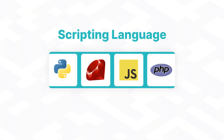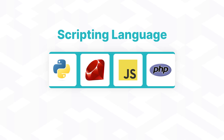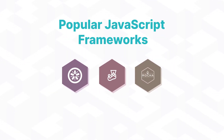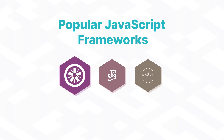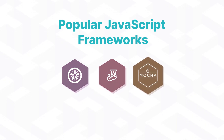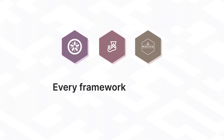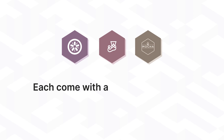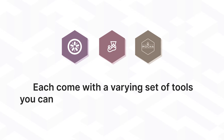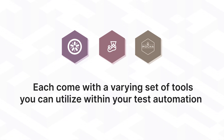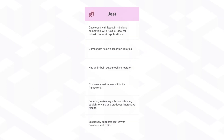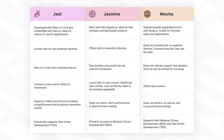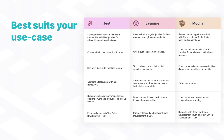Every scripting language comes with a number of different frameworks to select from. Popular JavaScript frameworks include Jasmine, Jest, and Mocker. Every framework may use a slightly different syntax and each comes with a varying set of tools you can utilize within your test automation. Be sure to compare all of the test frameworks and select the one which best suits your use case.